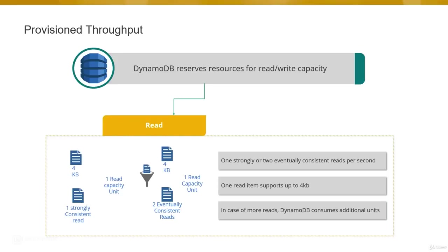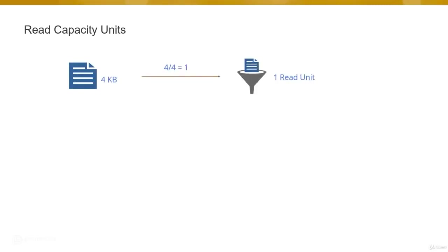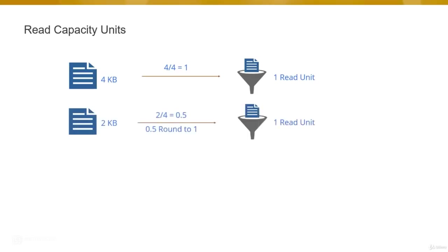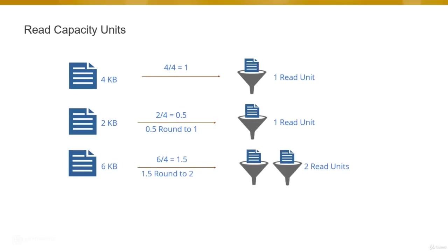So far we have learnt the theory of DynamoDB — how to create tables, what are tables, items, attributes, and how to calculate capacity units. It's time for a demonstration. In this demonstration, we'll create a DynamoDB table, calculate the provisioned throughput for a table with a write capacity of 20 items at 4 KB size and read capacity of 80 items, then insert items and query the DynamoDB.